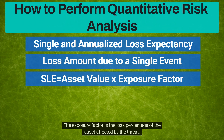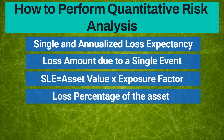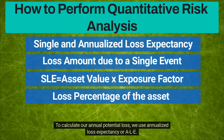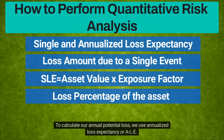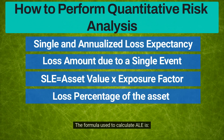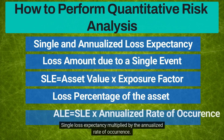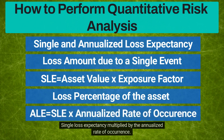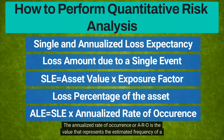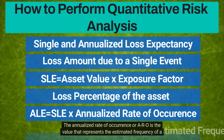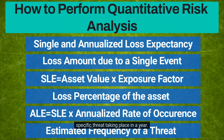The exposure factor is the loss percentage of the asset affected by the threat. To calculate our annual potential loss, we use annualized loss expectancy, or ALE. The formula used to calculate ALE is single loss expectancy multiplied by the annualized rate of occurrence. The annualized rate of occurrence, or ARO, is the value that represents the estimated frequency of a specific threat taking place in a year.